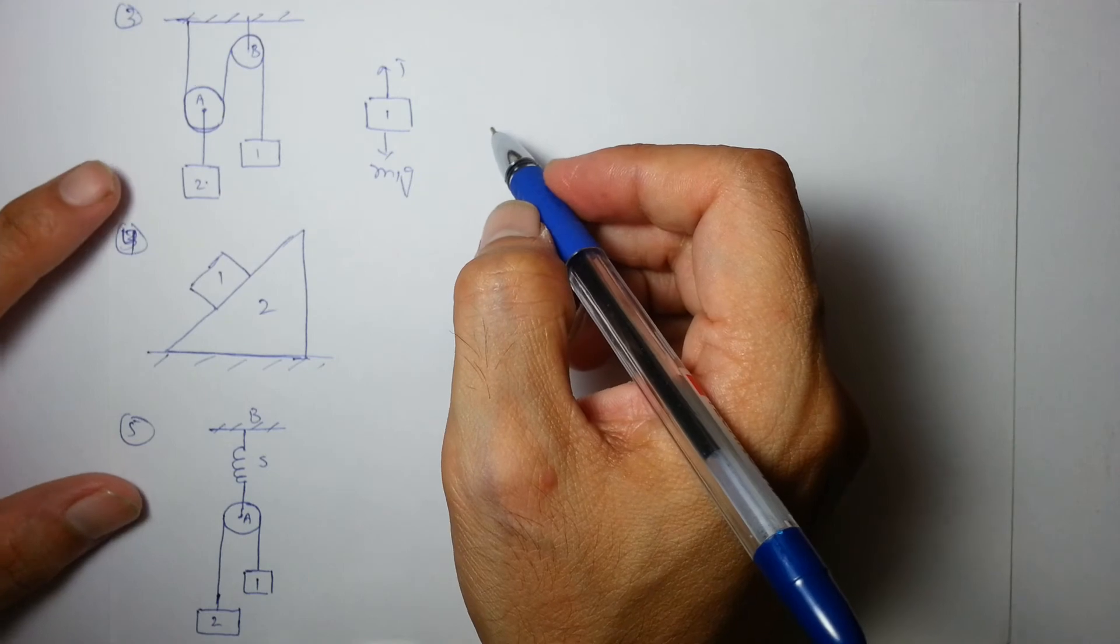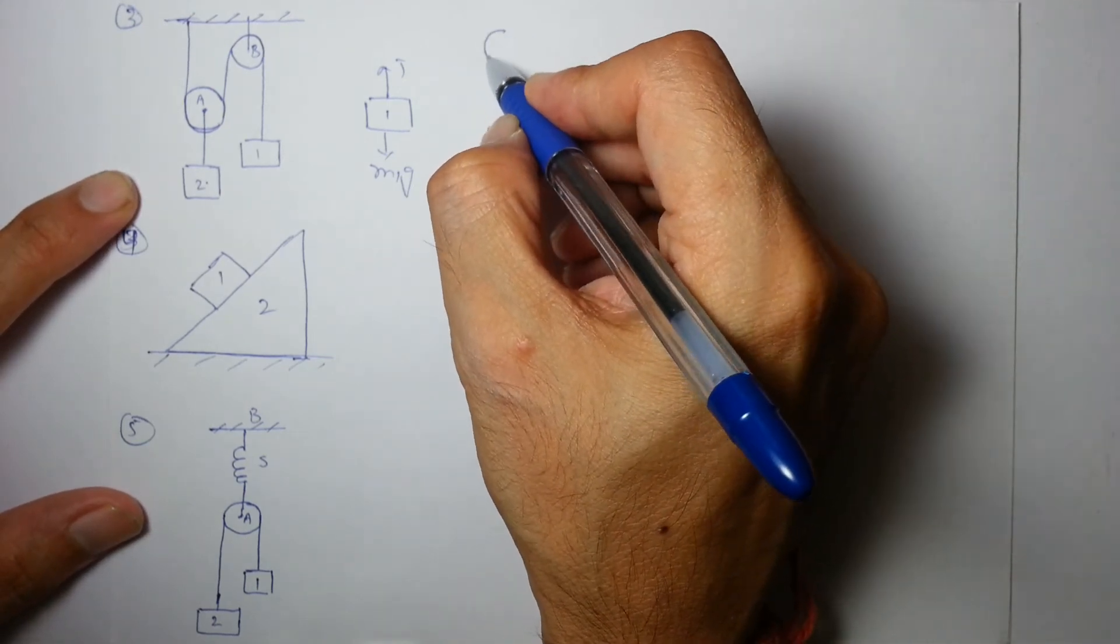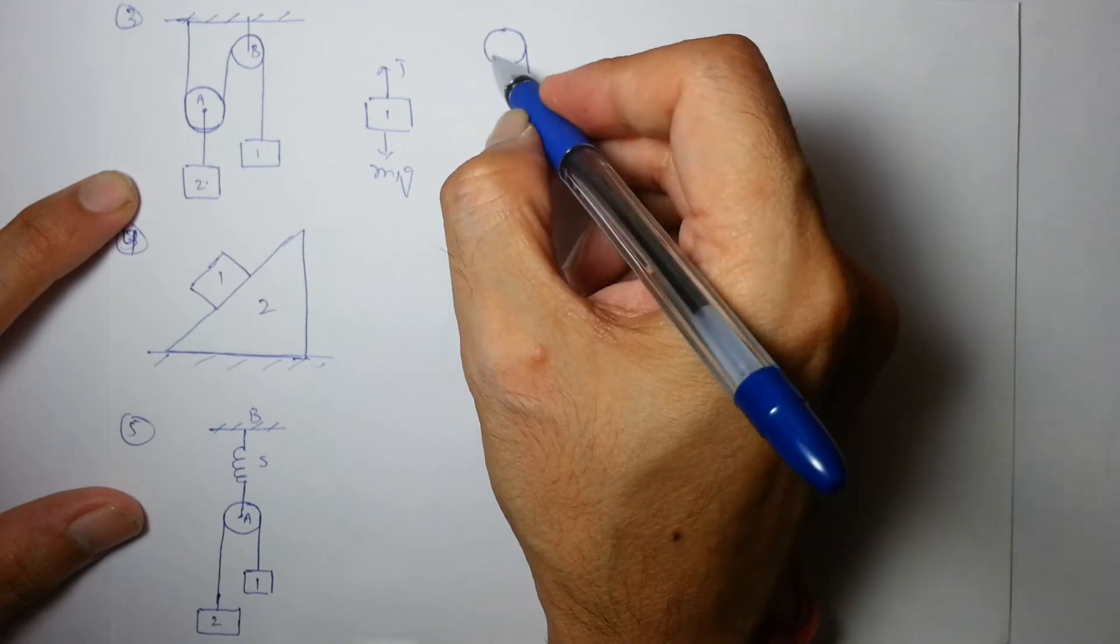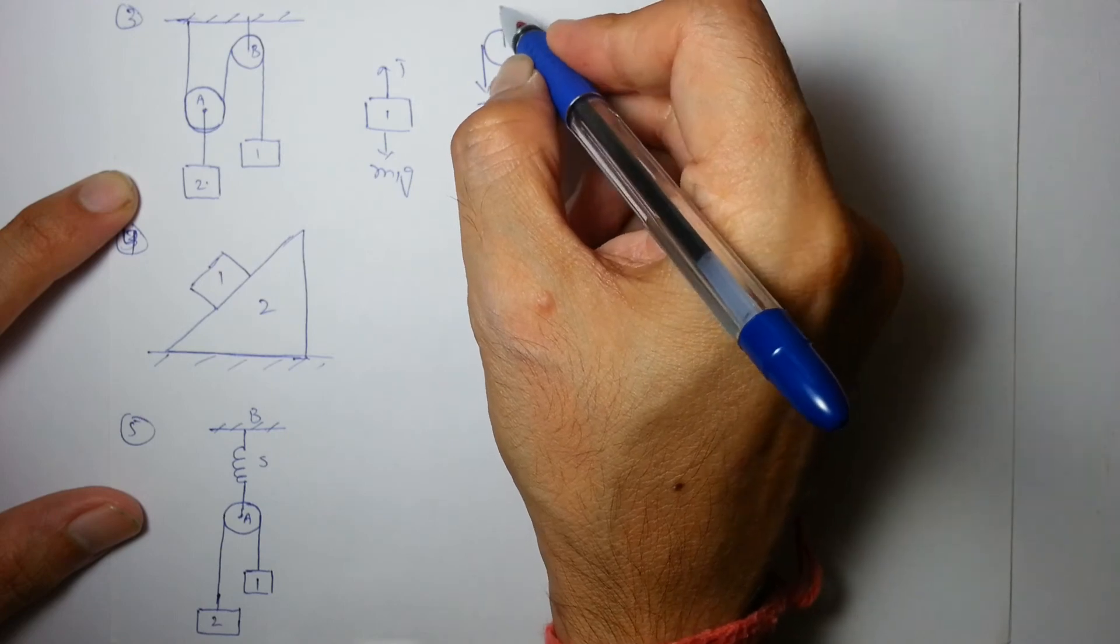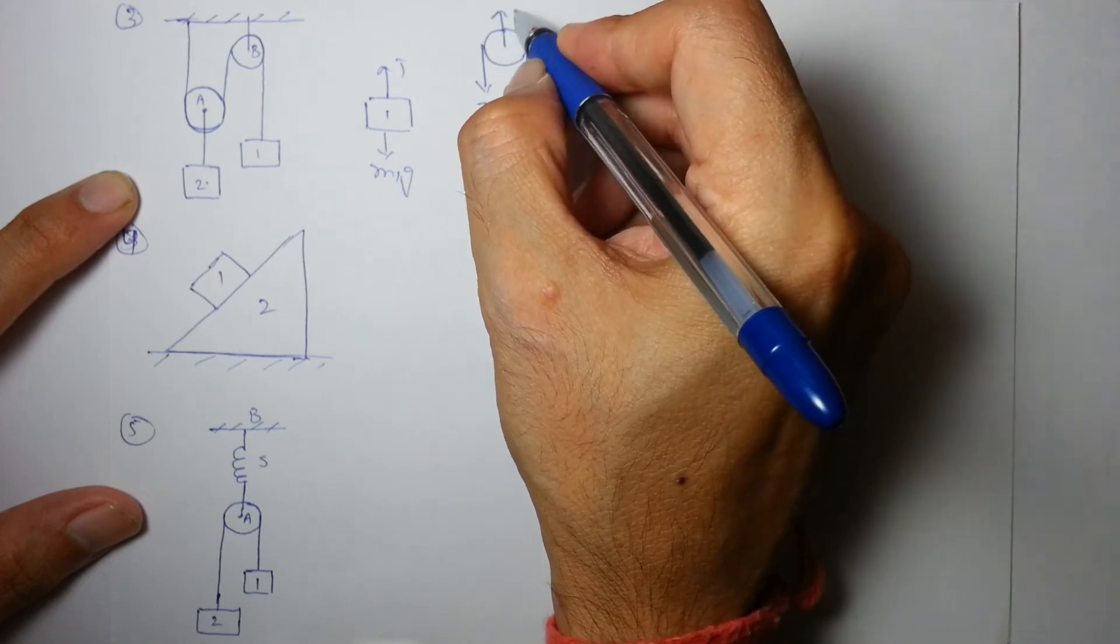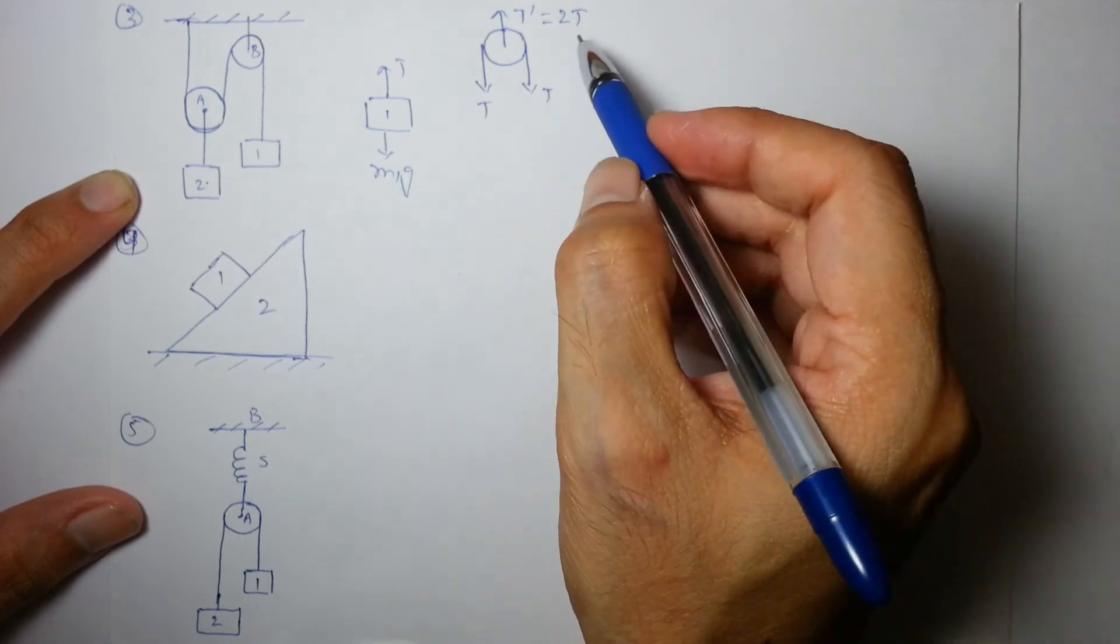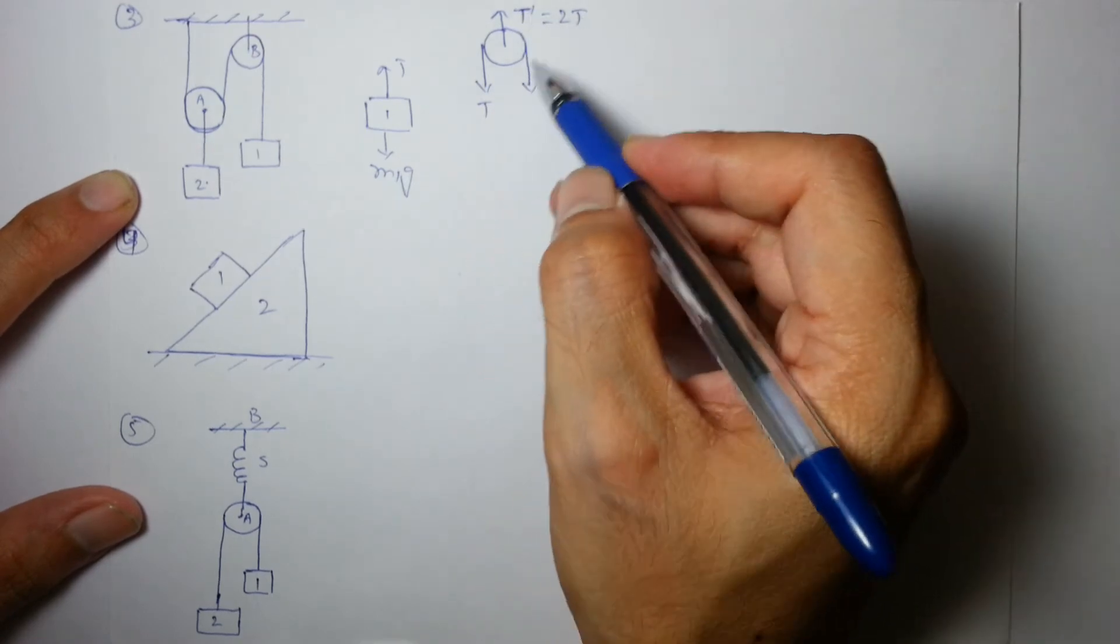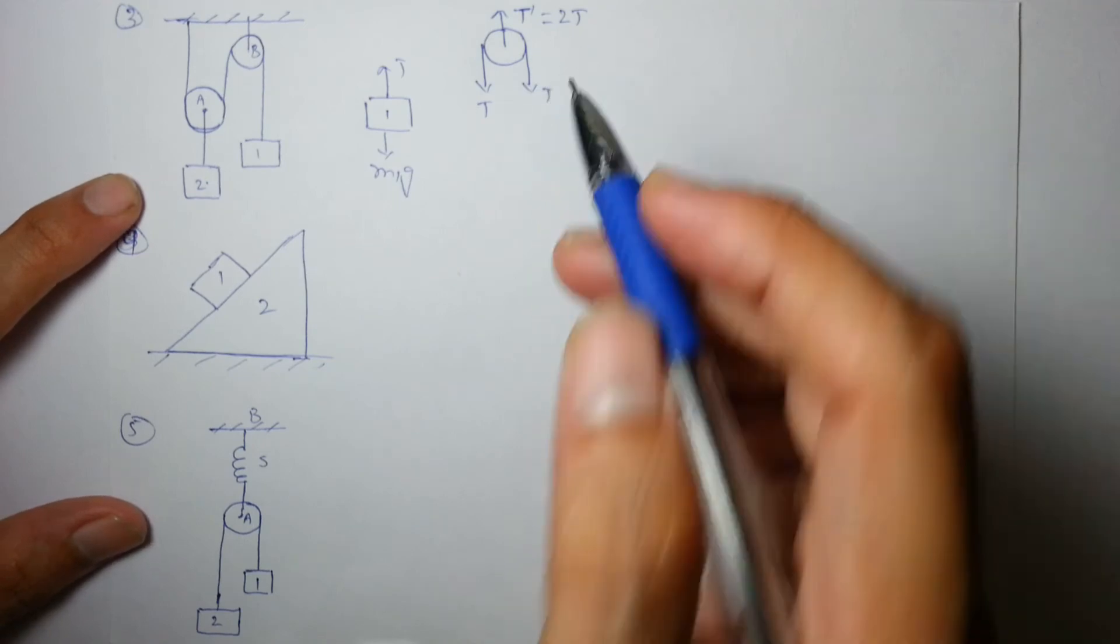What about pulley b? Pulley b is experiencing two downward tensions from the rope and an upward force that will be, let's say, t dash, must be equal to 2t. There is a simple concept that the net force on a massless object must be zero, otherwise it will accelerate to infinite.